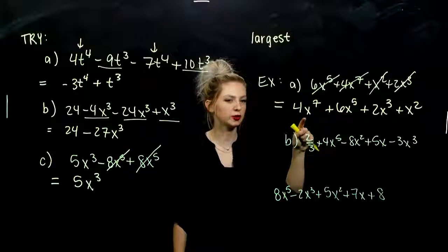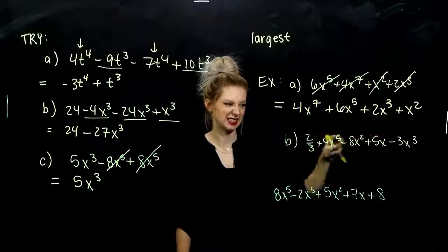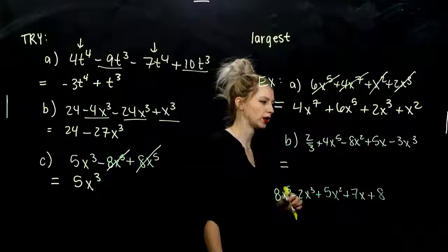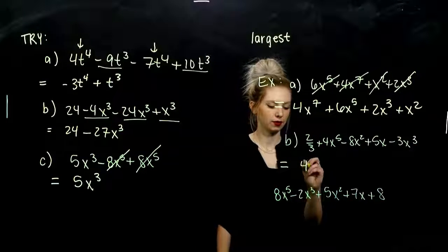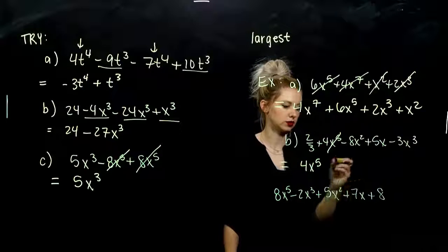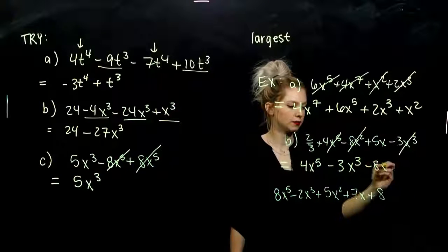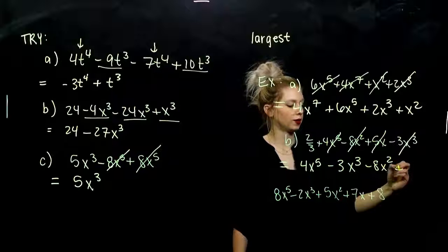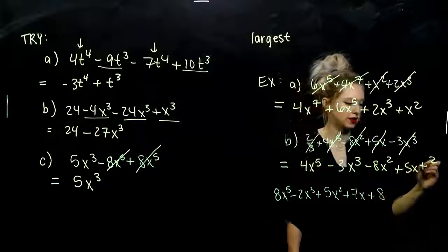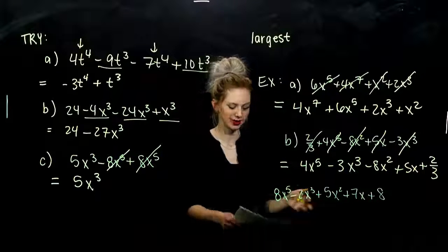So we have a polynomial of degree seven — the highest. When it's in descending order, it's easy to see that right away. Same thing for part B: the highest power is to the fifth, then to the third, then squared, then to the first, then the zeroth constant on the end — a polynomial of degree five. When it's in that order, it's easy to see.